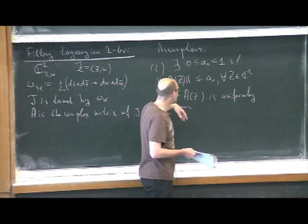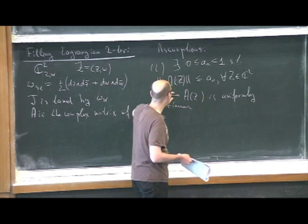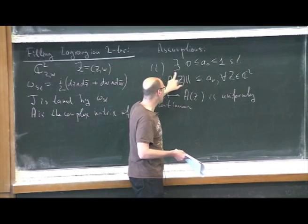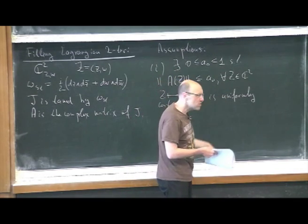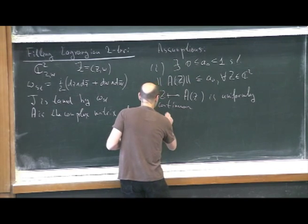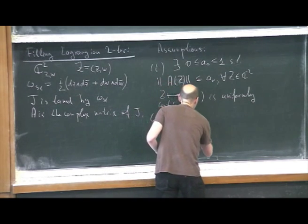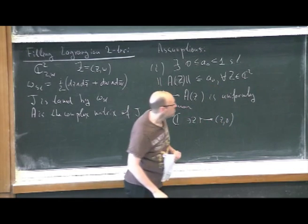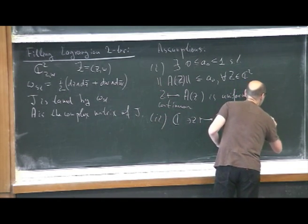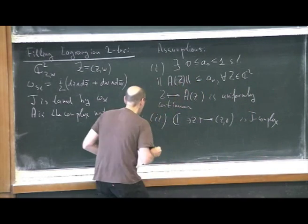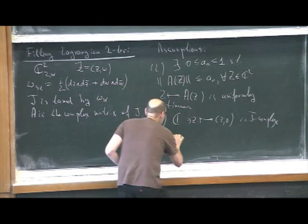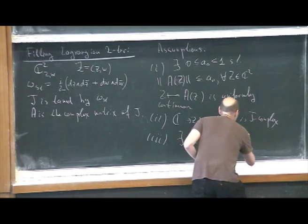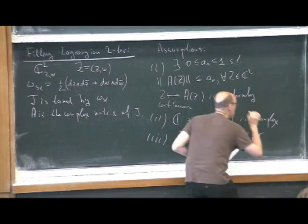We suppose also that the map Z ↦ A(Z) is uniformly continuous on C². This is for some technical reasons in order to have good global isoperimetric properties for the structure. In applications, this condition will be automatically satisfied because the support of the difference from the standard structure will be compact. The second assumption is: this map is J-complex. And the third assumption is: there exists Z₀ in D such that the vertical line {Z₀} × C is J-complex.